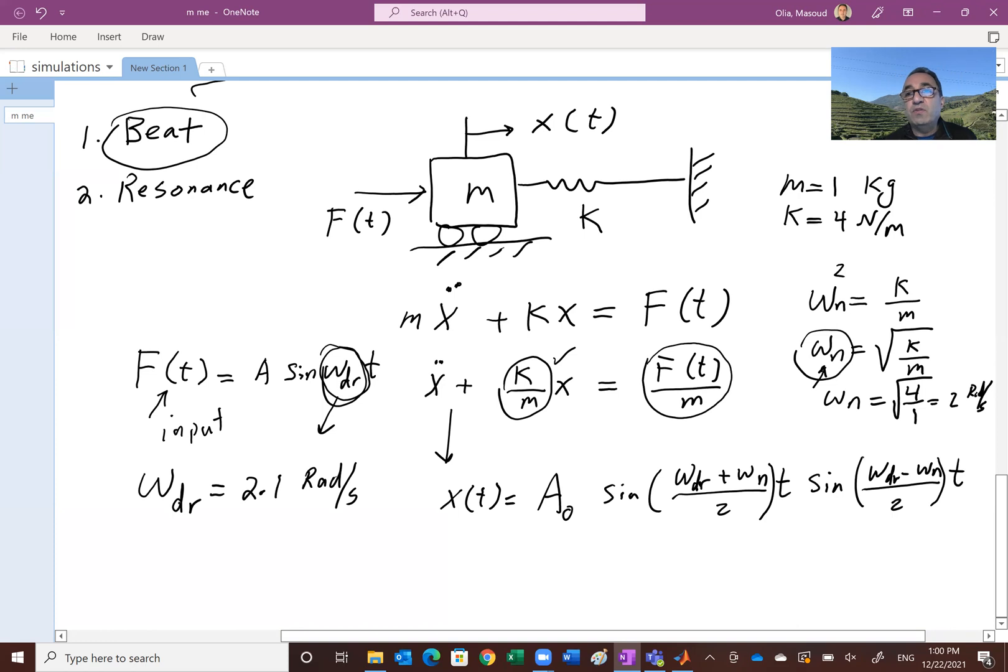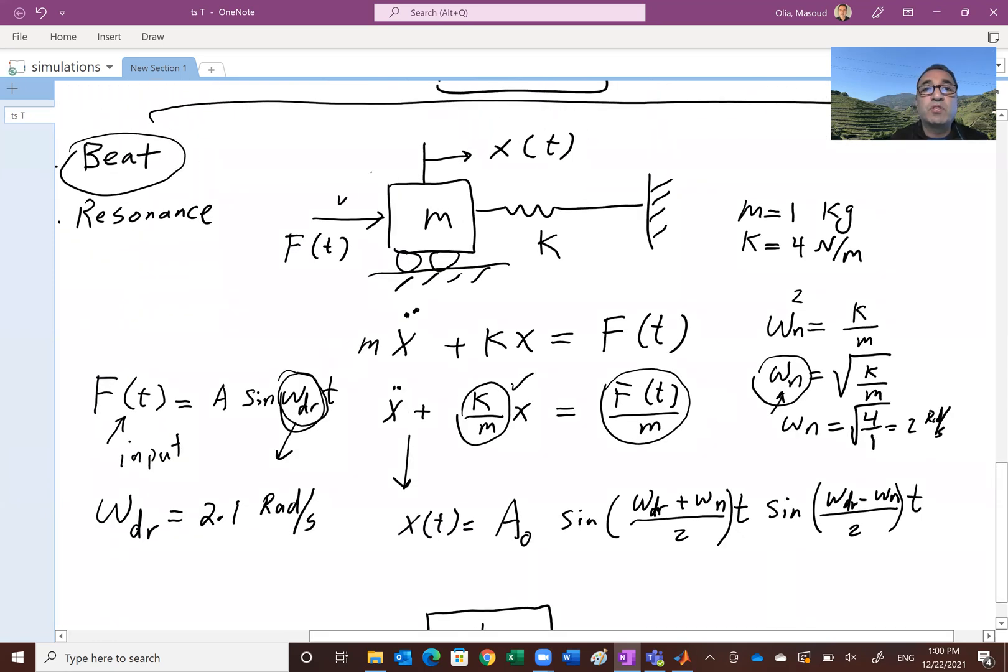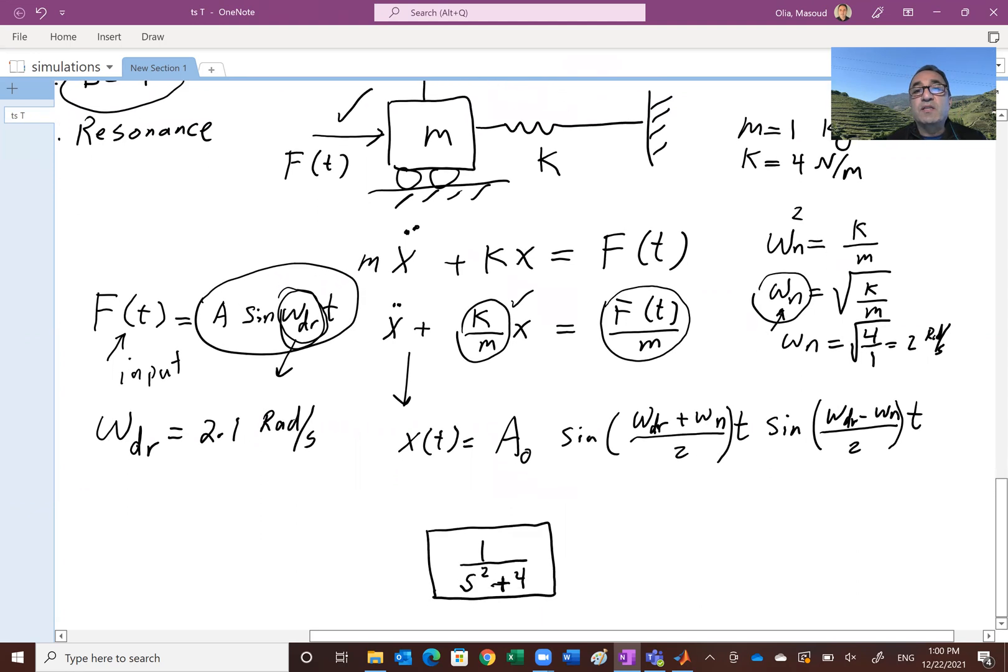By the way, as we try to use the transfer function scheme, you've seen in another video that the transfer function of such a system would be, with the mass of one and k of four, would be one over s squared plus four. Of course, we are saying that this system is only being subjected to this force, a harmonic force, sine wave or cosine wave, and there is no initial conditions.